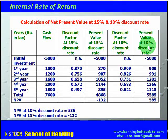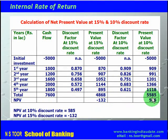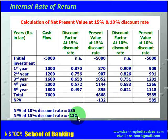At 10% discount rate, the net present value is positive 585. At 15% discount rate, the net present value is minus 132. We need a discount rate where the NPV is neither negative nor positive — it should be zero. Since at 10% it is positive and at 15% it is negative, the discount rate must fall within the 10% to 15% range. So IRR should be within the 10–15% range.